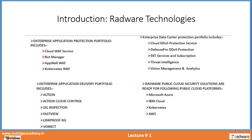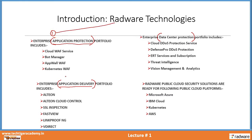Radware technology has around a couple of portfolios. They have a couple of verticals and different solutions in each of these verticals. They have an enterprise's application protection portfolio. I want you to pay attention — this is called application protection, this is called application delivery. There is a difference between application delivery and application protection. And these are enterprise's data center protection portfolios. Application protection is one vertical with Radware, and application delivery is another portfolio with Radware.